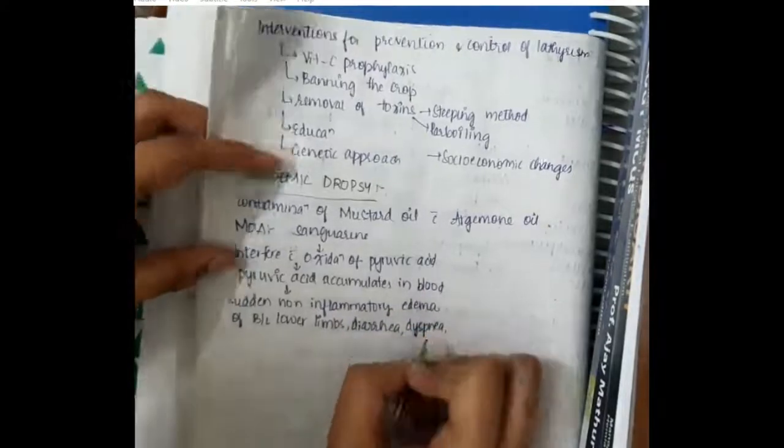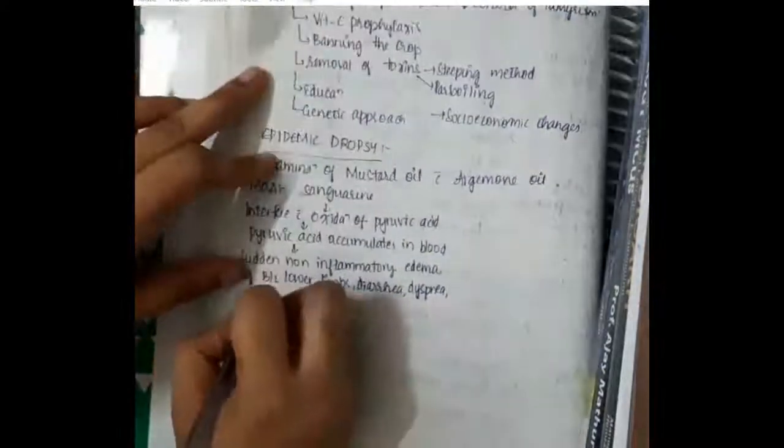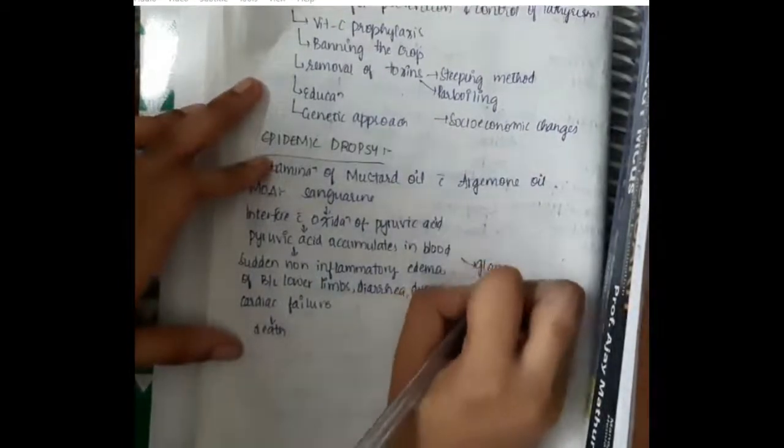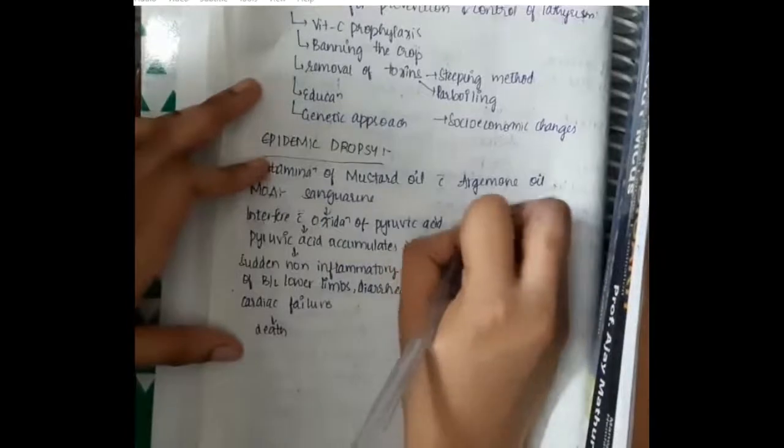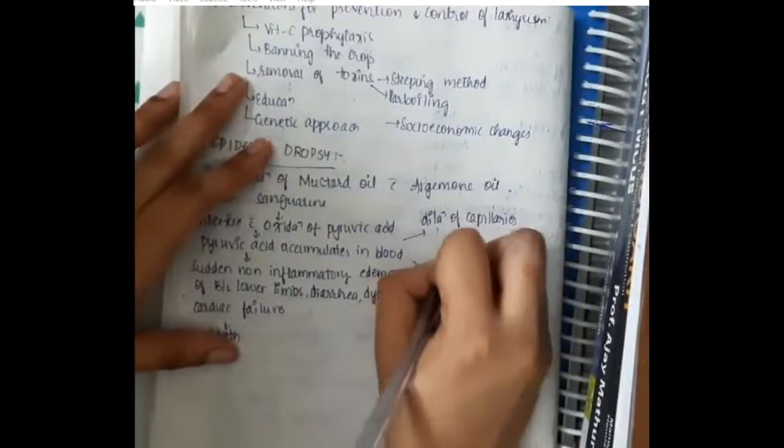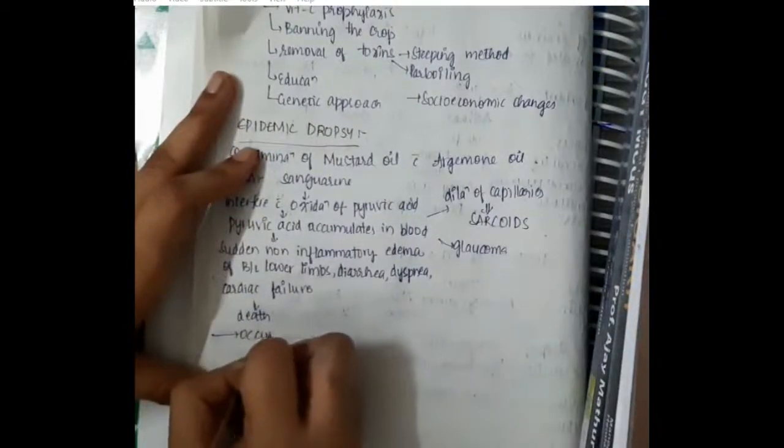It also causes diarrhea, dyspnea and also it is toxic to heart and it causes cardiac failure. Finally, it can lead to death. This pyruvic acid can also cause glaucoma and it can also cause dilatation of capillaries leading to formation of erythema.